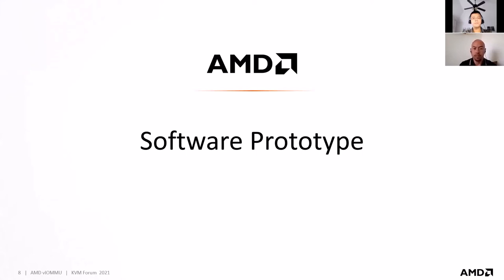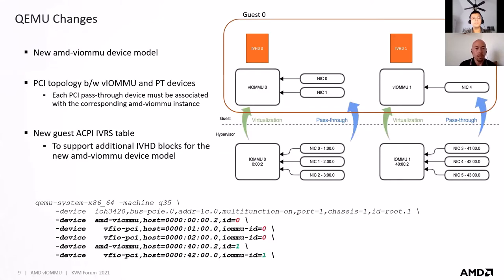Starting with the QEMU changes, we introduced a new device model specifically for AMD VIOMMU. We need to be able to specify the PCI topology between the VIOMMU and the pass-through devices. For example, we have a guest VM with three NICs passed through: NIC 0, NIC 1, and NIC 4. NIC 0 and NIC 1 are associated with IOMMU 0, and NIC 4 is associated with IOMMU 1. When supporting device passthrough with VIOMMU, we need to correlate the NICs to their parent IOMMU.